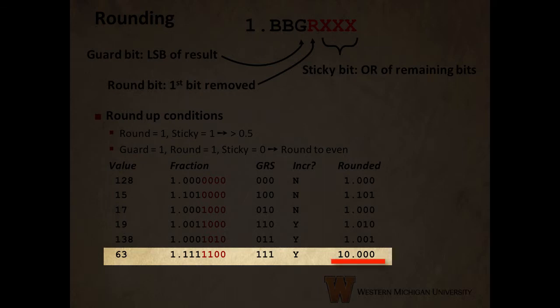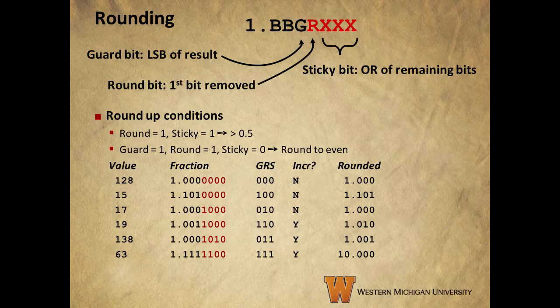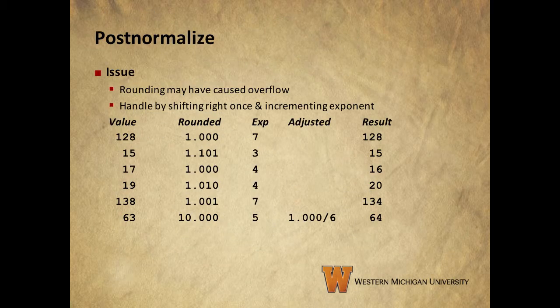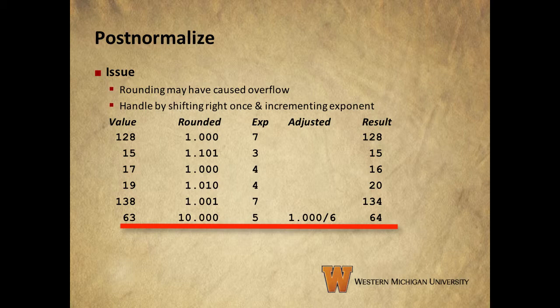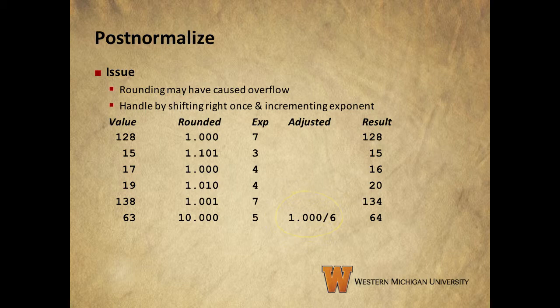Notice that in the case of 63, we end up with m being equal to 2, so we're going to have to post-normalize. Our rounding has caused an overflow and we need to fix that. We can handle it by shifting right once and incrementing the exponent, as shown here. And that covers the end of chapter 2. Thanks so much for sticking with me, and we will see you in our next set of videos on chapter 6, covering the memory hierarchy and cache memories.